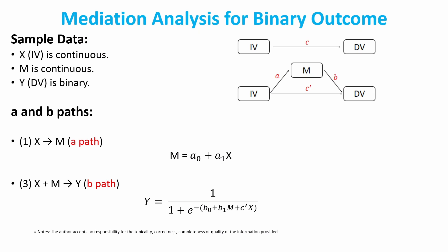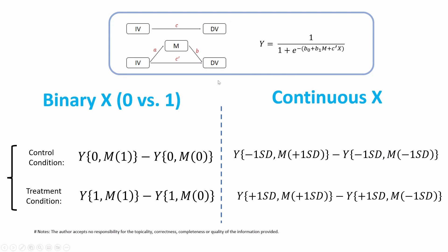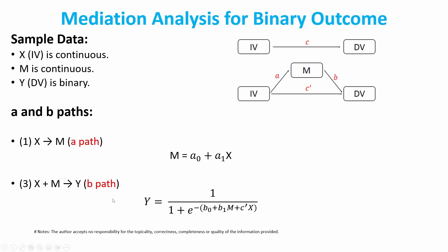In this simple example, x is a continuous variable, m (the mediator) is also continuous, and y is binary. For the a-path regression we use linear regression, and for the b-path we use logistic regression. When using the mediation package, the default assumption is that x is binary — zero and one — and that is how it calculates the control condition and the treatment condition for the indirect effect.